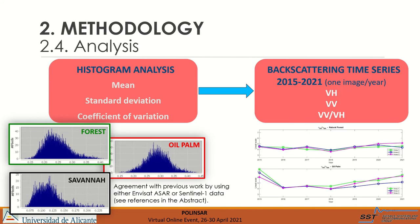For each polygon, we have obtained the histogram and the corresponding mean, standard deviation, and coefficient of variation values. After the histogram analysis, backscattering time series have been obtained from 2015 to 2021, with one image per year, for both VH and VV channels. In addition, the ratio between VV and VH has also been investigated.